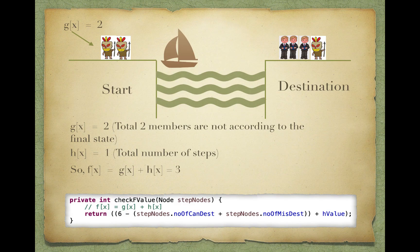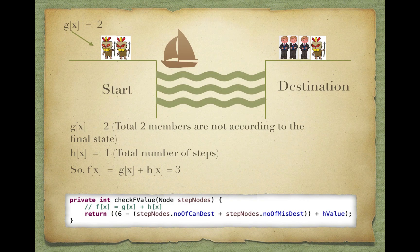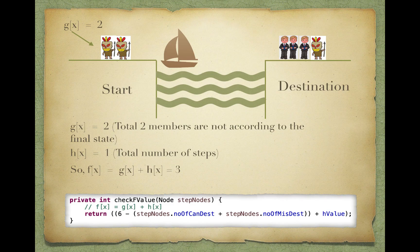Now, g(x) equals 2, and that is because we have a total of two members which are not according to the final state. That is, two cannibals are still at the starting point, whereas the final state requires all six members at the destination point. So g(x) equals 2.